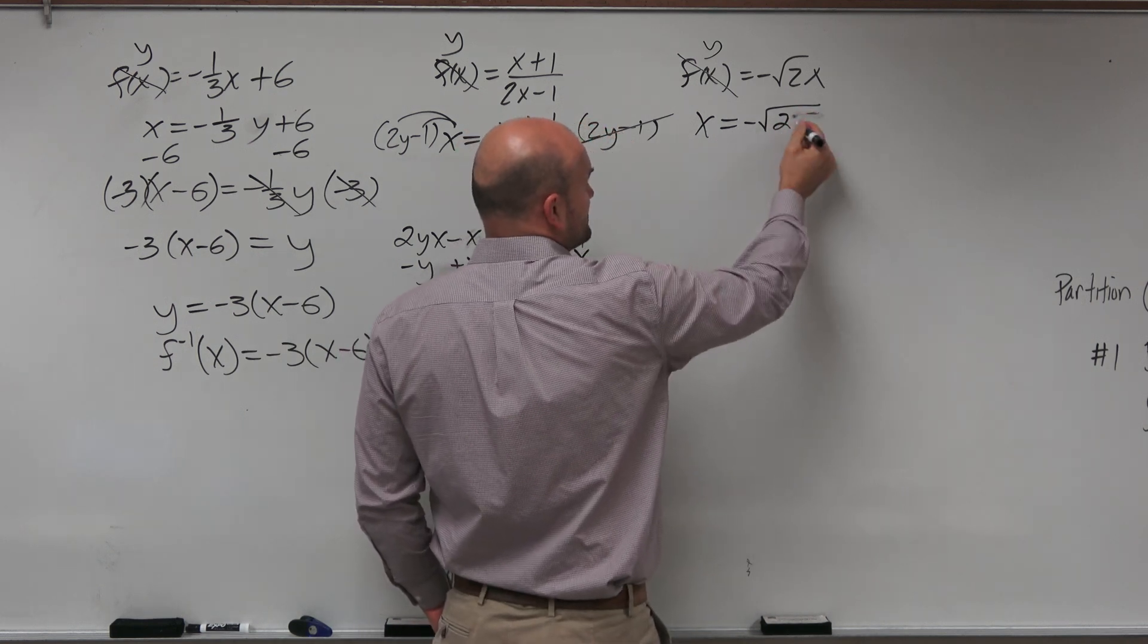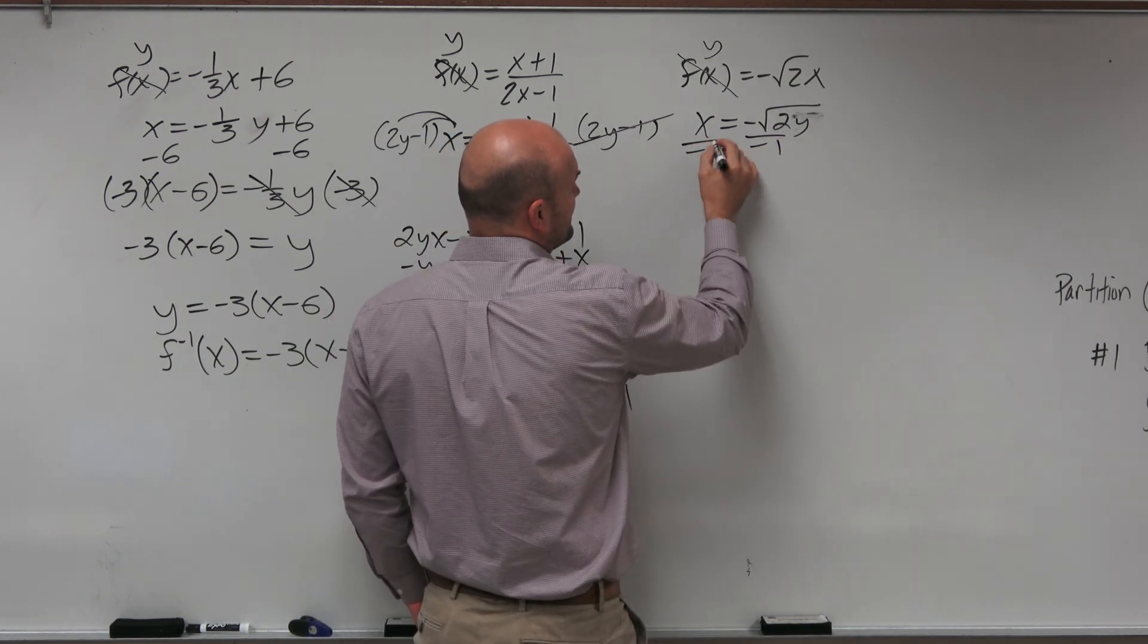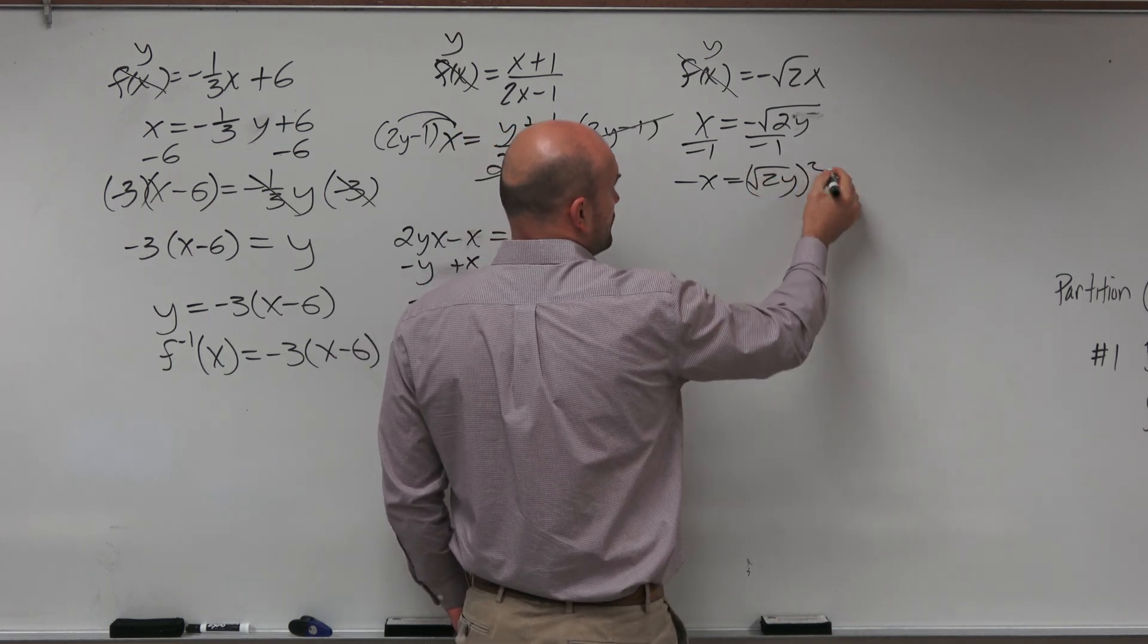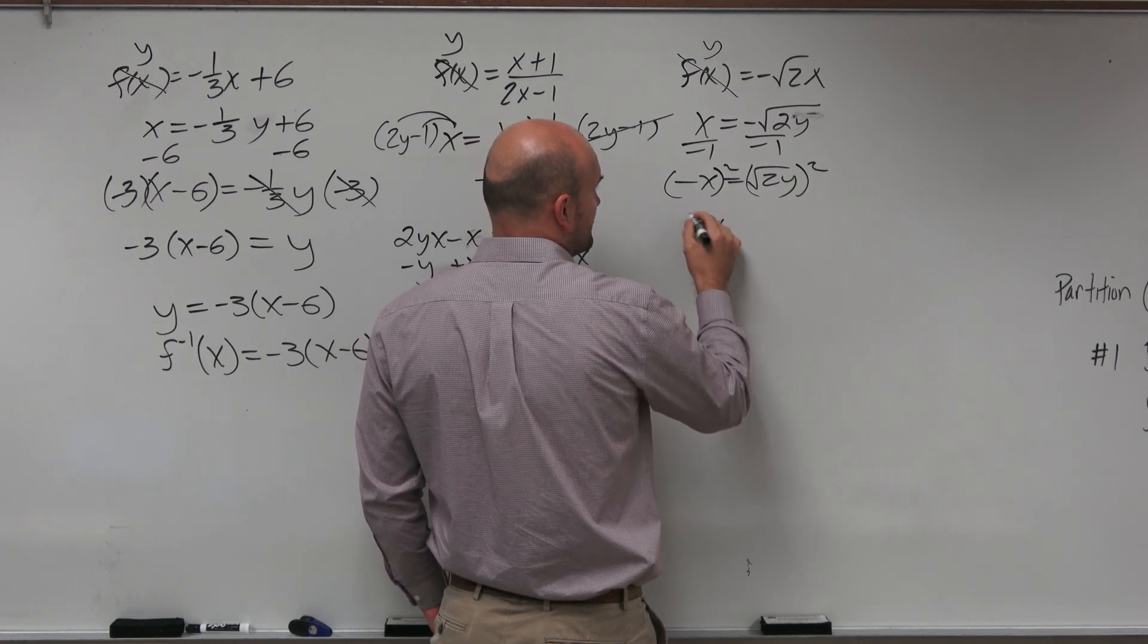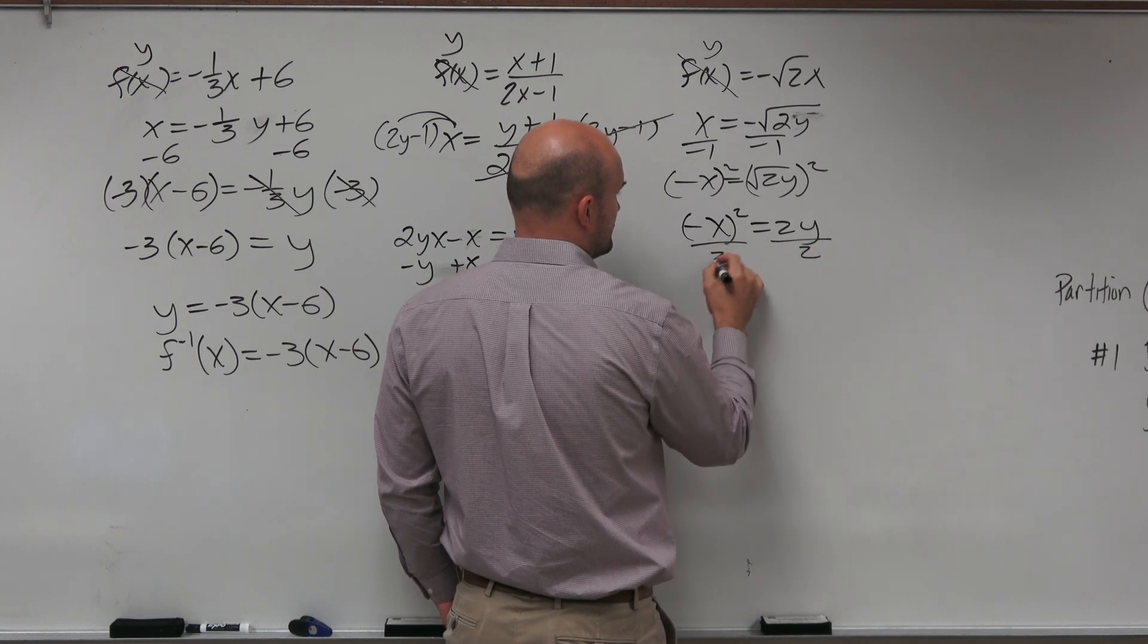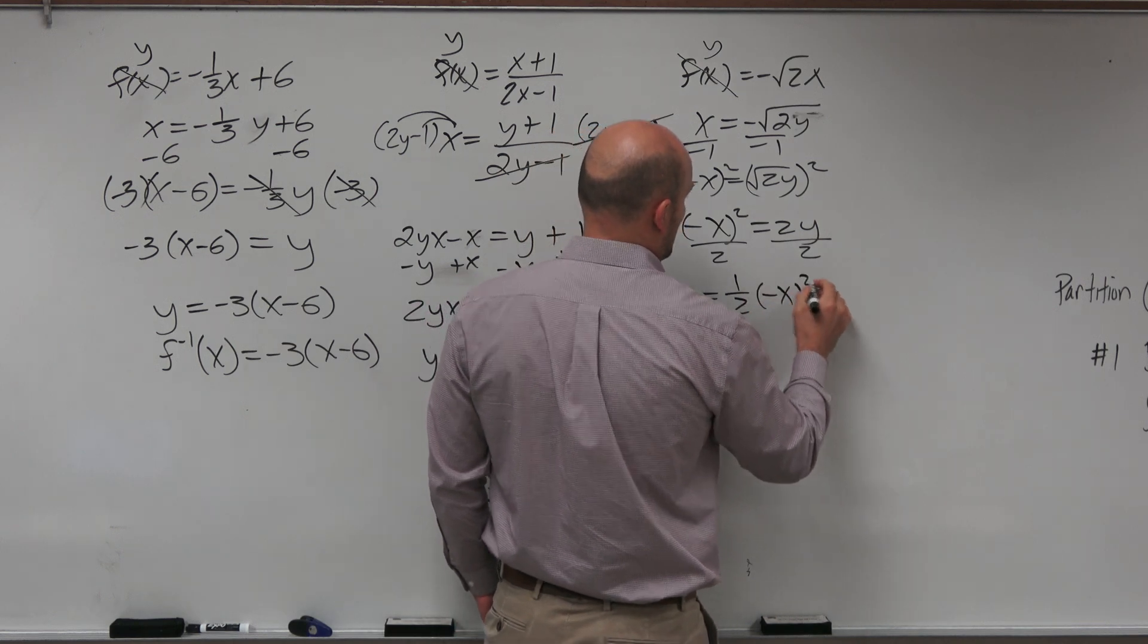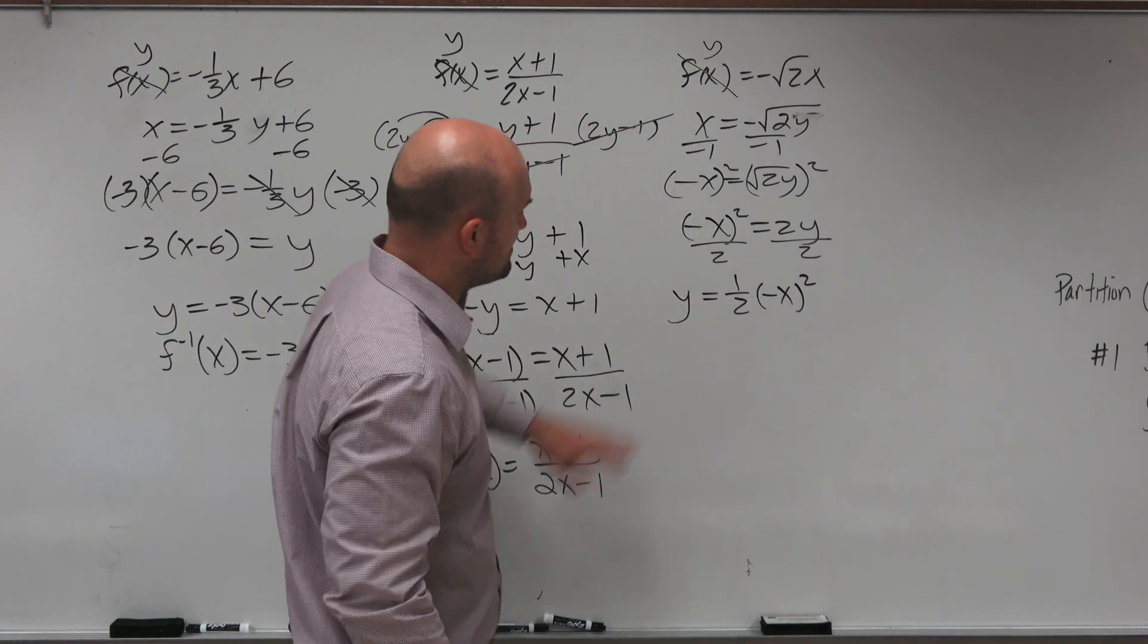And then let's keep on swapping your variables. I'm making that mistake all the time. And then we're going to go ahead and use our inverse operation. So that's negative x equals square root of 2y. We're going to undo the square root by squaring on both sides. And therefore, I get negative x squared equals 2y divided by 2, divided by 2. And I'm just going to rewrite this in this format. It's 1/2 negative x squared. Now again, you could write that as positive x squared. I get it. But I'm just going to leave it from here.